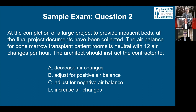Sample exam question number two: At the completion of a large project to provide inpatient beds, all the final project documents have been collected. The air balance for bone marrow transplant patient rooms is neutral with 12 air changes per hour. The architect should instruct the contractor to — A, decrease the air changes; B, adjust for positive air balance; C, adjust for negative air balance; D, increase air changes.